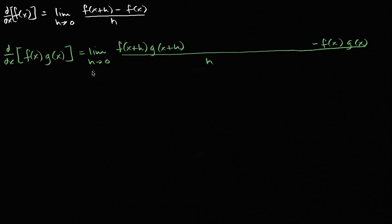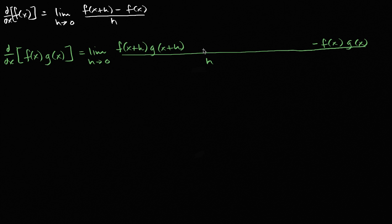Limit as h approaches zero. Now why did I put this big awkward space here? Because just the way I've written it right now, it doesn't seem easy to algebraically manipulate. I don't know how to evaluate this limit — there doesn't seem to be anything obvious to do. And what I'm about to show you, you could view it as a little bit of a trick. I assume somebody was fumbling with it long enough and said: if I just add and subtract the same term here, I can begin to algebraically manipulate it and get it to what we all know is the classic product rule.